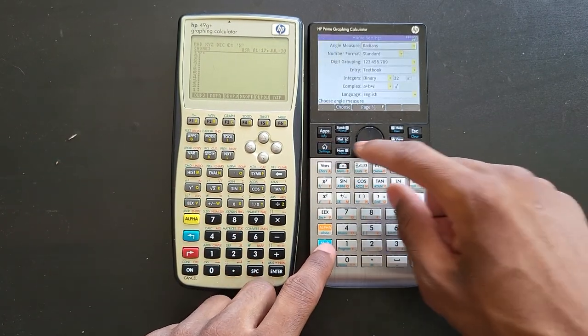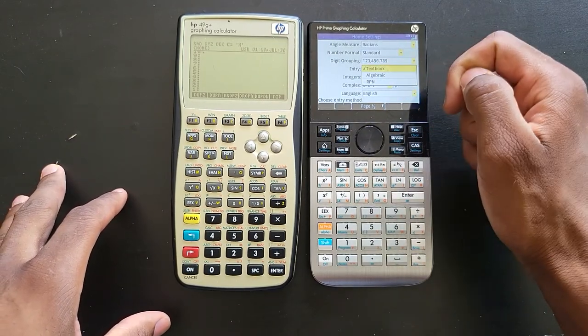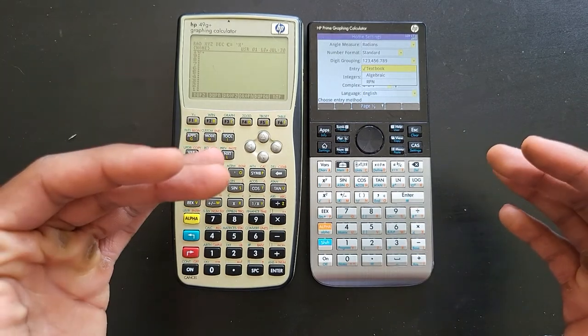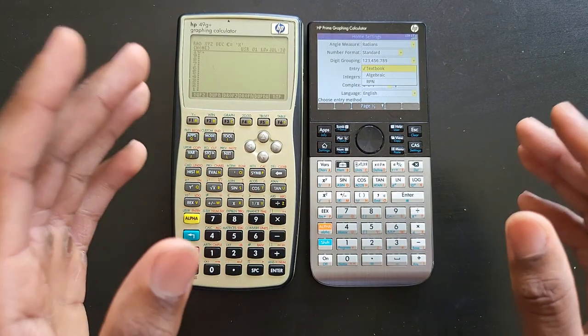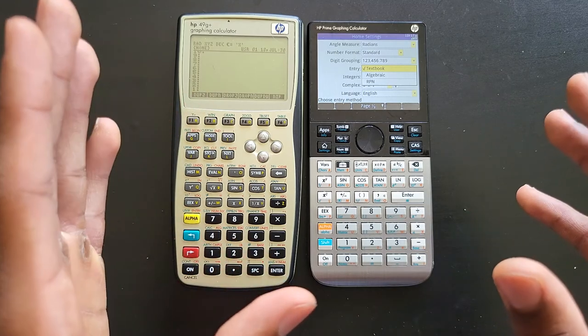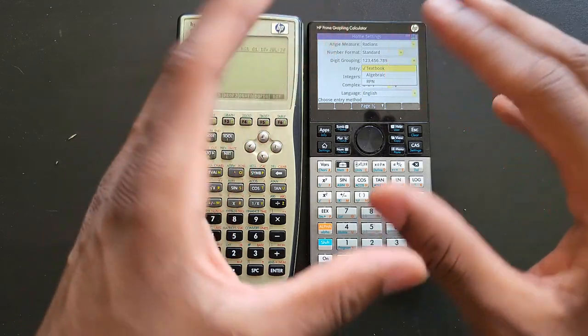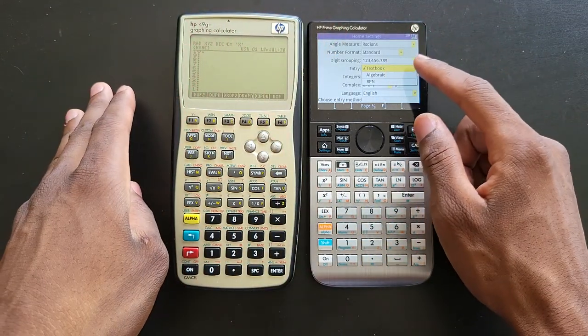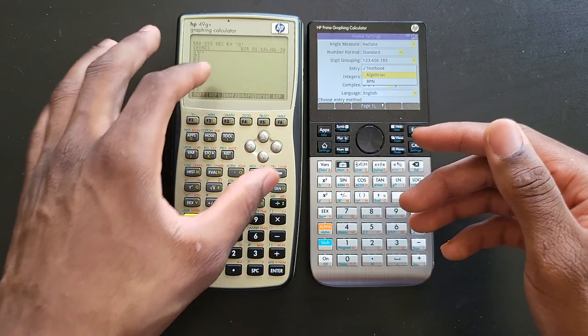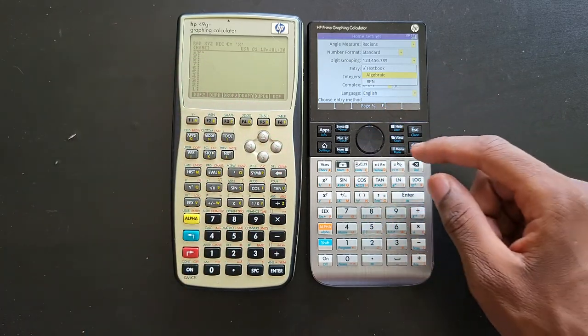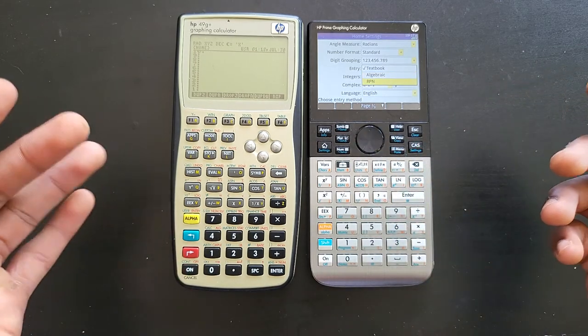This calculator gives you the option to choose your entry: textbook notation, which is what most people are used to these days with modern calculators - it shows you stuff the way you would see in a book with pretty print. Algebraic mode is a more legacy form, and RPN is a way of doing math in itself.